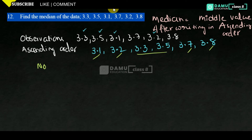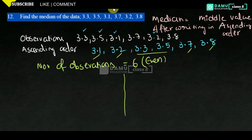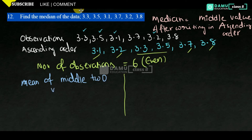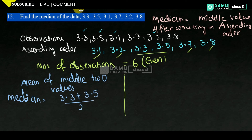Canceling from both ends: 3.1 and 3.8 cancel, then 3.2 and 3.7 cancel, leaving two middle values. The number of observations is 6, which is even. For an odd count there is a single middle value; for an even count we take the mean of the two middle values. So median equals mean of middle two values: (3.3 plus 3.5) divided by 2.